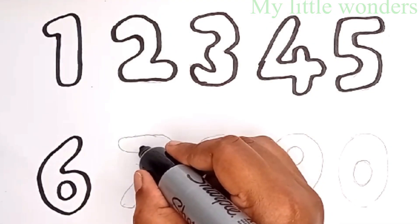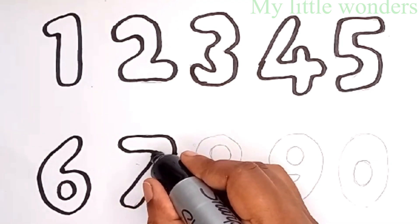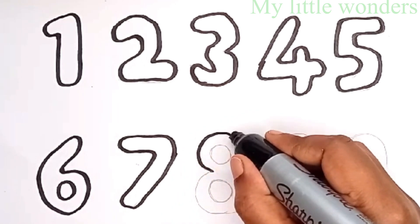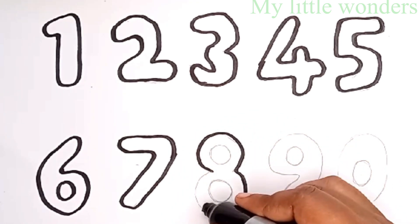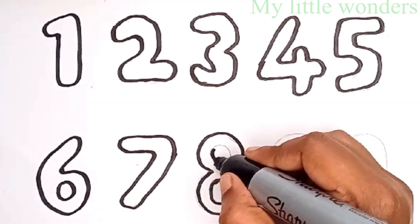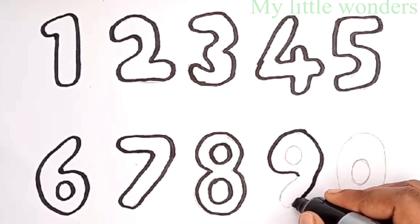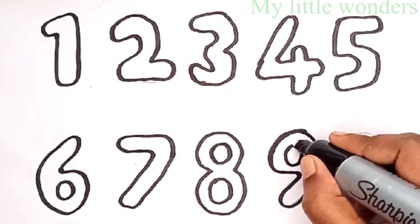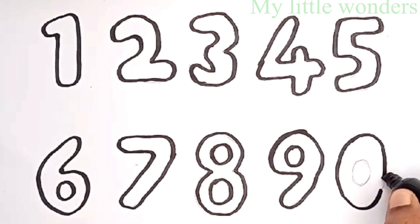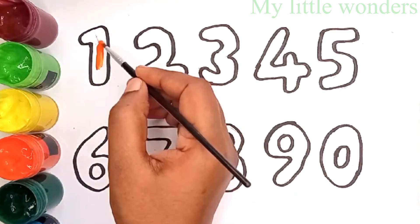Seven! Eight! A tisket, a tasket, a green and yellow basket. I wrote a letter to my cup, and on the way I dropped it, dropped it, I dropped it, and on the way I dropped it. A little boy he picked it up and put it in his pocket.